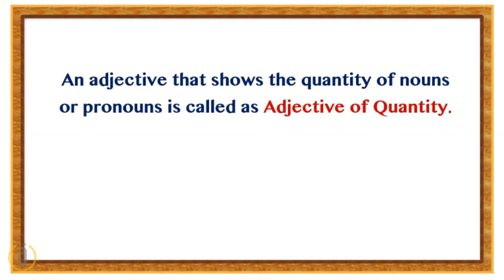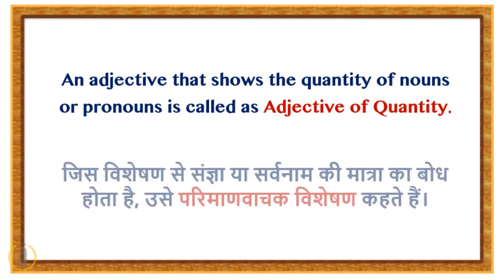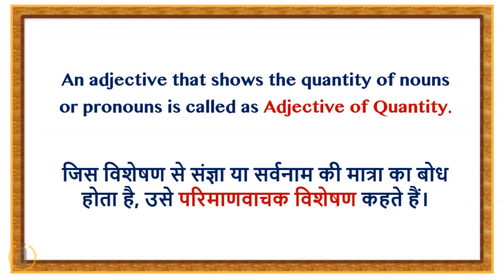An adjective that shows the quantity of nouns or pronouns is called an adjective of quantity. Jis vishetian se sagya ya sarwanaam ki matra ka bodh hota hai, usse pariman vachak vishetian kehette hai.